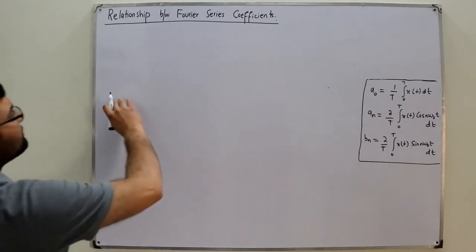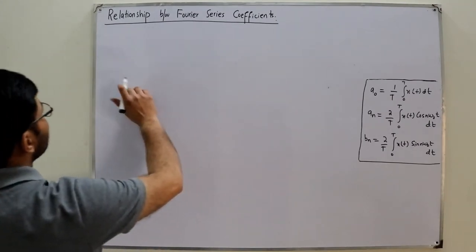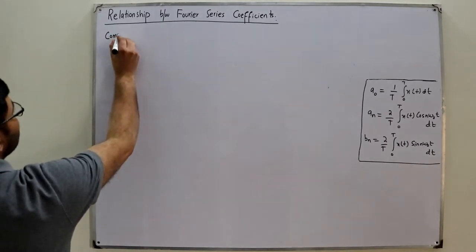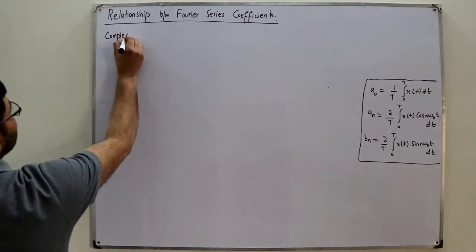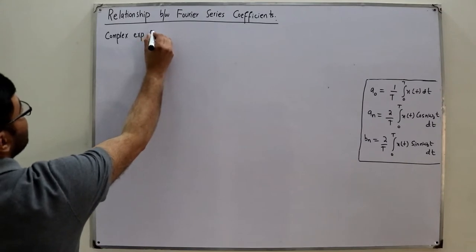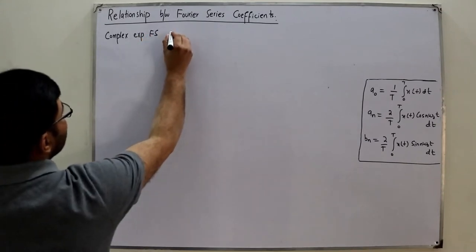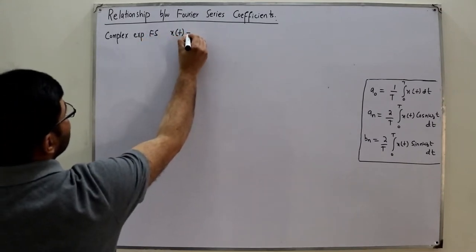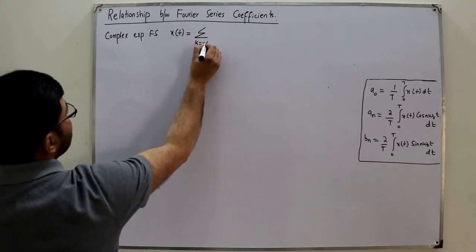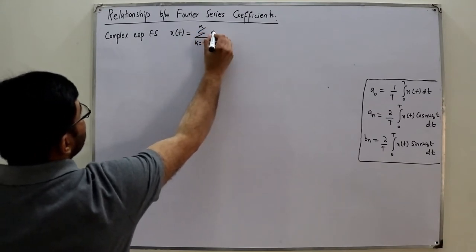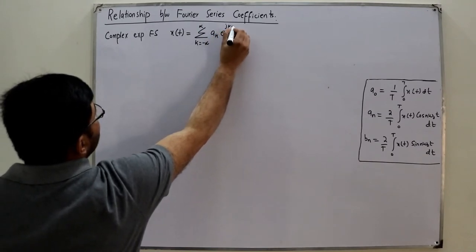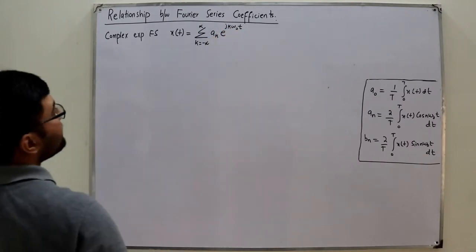The complex exponential Fourier series was written as: x(t) = summation k running from negative infinity to positive infinity of a_k times exponential of j*k*omega_0*t.